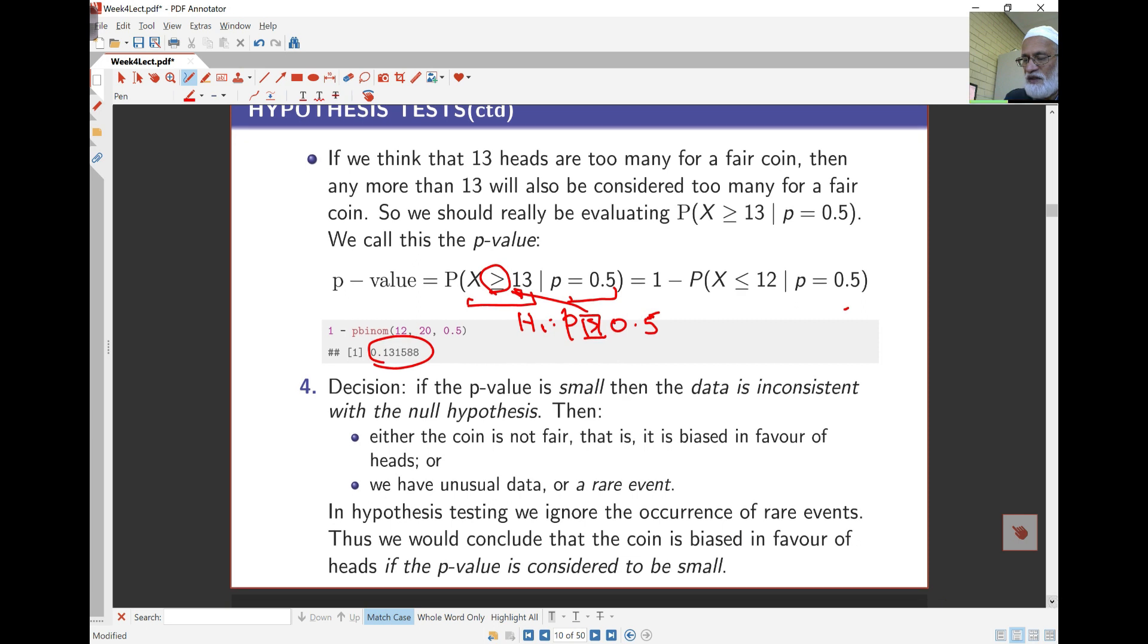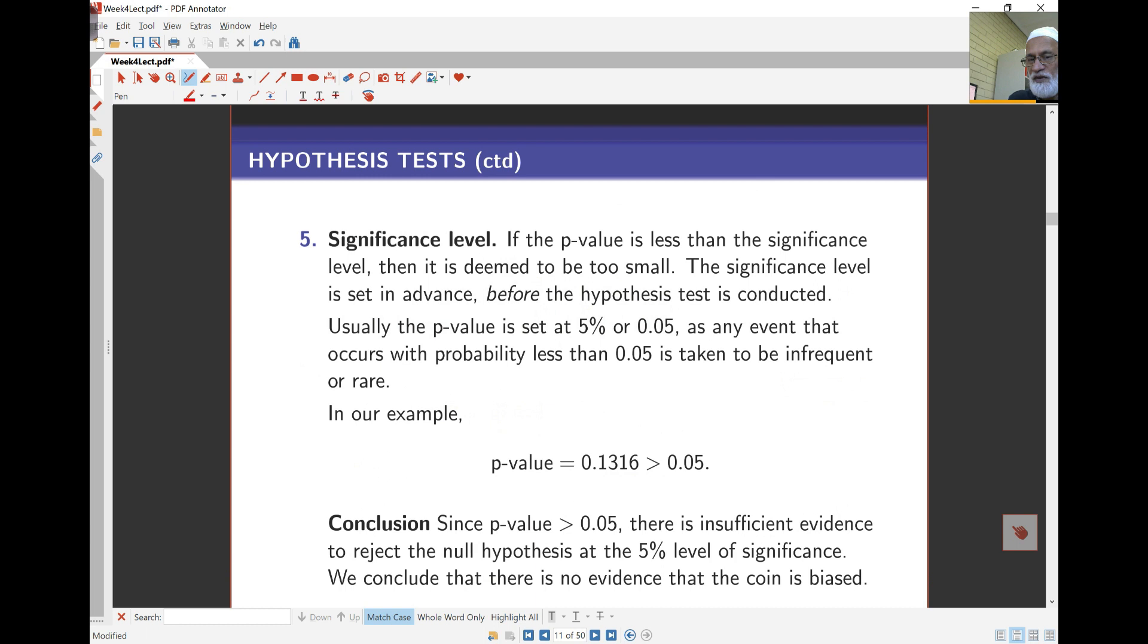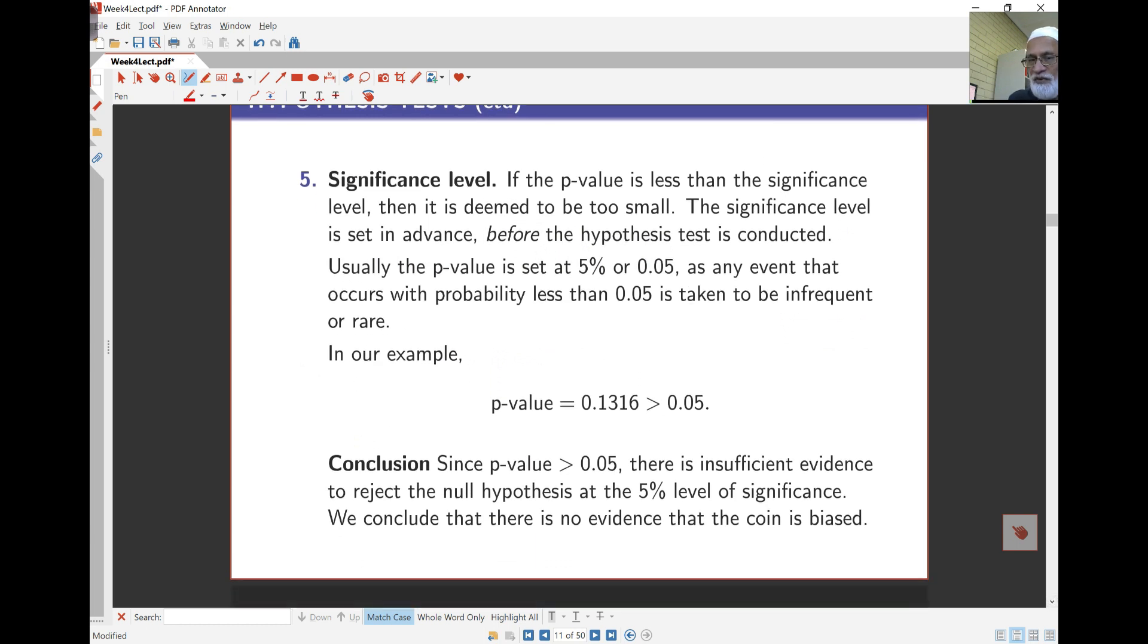The decision here is that if the P-value is small, then the data is inconsistent with the null hypothesis. What I observe and the null hypothesis aren't consistent. Then, either the coin is not fair, or the data is unusual and I've got a rare event. In hypothesis testing, we ignore or discount the occurrence of rare events. So if the P-value is small, I would then conclude that the coin is biased in favor of heads. In this case, though, whether the P-value is small or not needs to be decided by some way. What we do is we determine that by this preset significance level.